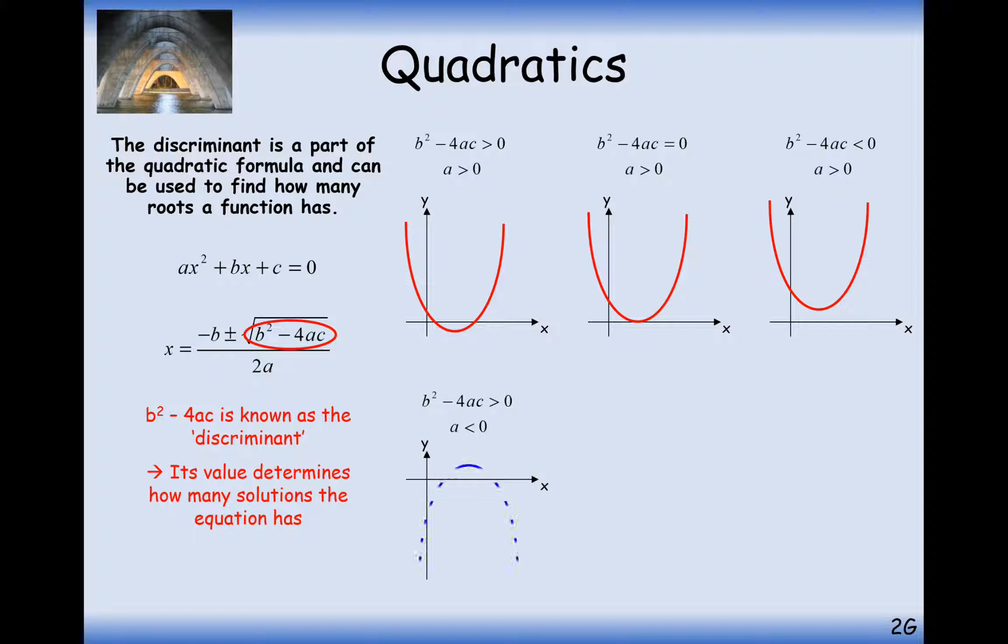And exactly the same thing works when you've got an upside-down graph as well. Nothing really changes. Two real roots is always b squared minus 4ac is greater than 0. For one root, it equals 0. And for no roots, it's less than 0.